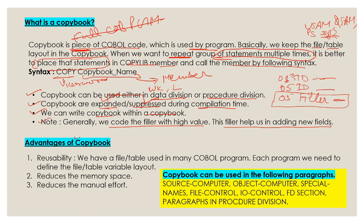What are the advantages of the copybook? It provides reusability — when a file or table is used in many COBOL programs, each program needs to define the file or table variable layout. It also reduces memory space and reduces manual effort. Copybooks can also be used in the source computer, object computer, special names, file control, I/O control, FD section, and paragraphs in the procedure division.